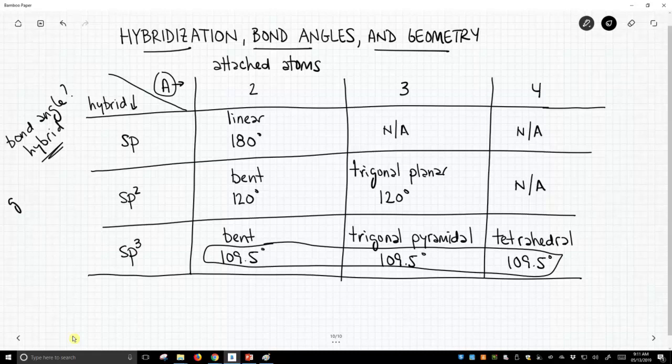What determines the geometry? The geometry is about both hybridization and the number of attached atoms. We need to know both of those items to determine the geometry because it can change: linear, bent, trigonal planar, trigonal pyramidal, you name it.